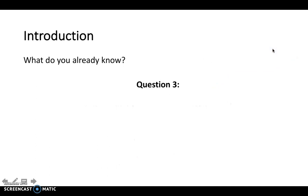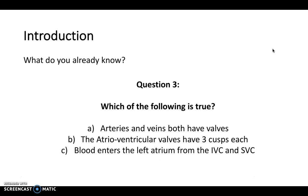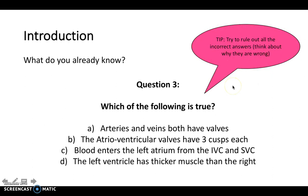Lastly, this is a bit more of a tricky question because you've got to eliminate the incorrect answers. Which of the following is true — is it A, that arteries and veins both have valves? Is it B, that the AV valves have three cusps each? Is it C, that blood enters the left atrium from the inferior vena cava and the superior vena cava? Or is it D, that the left ventricle has thicker muscle than the right? Try to rule out the incorrect answers to lead you to the correct answer.